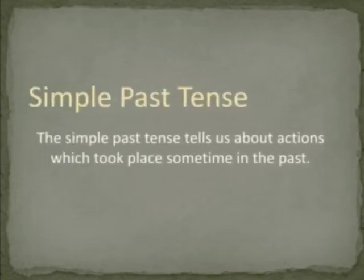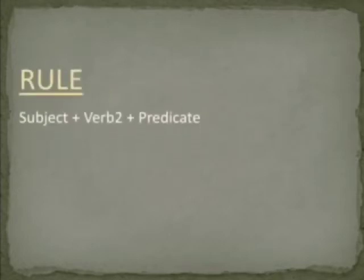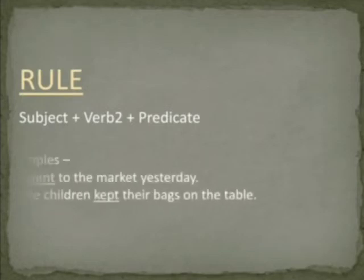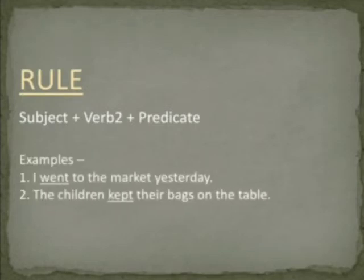Now let us see what is simple past tense. The simple past tense tells us about actions which took place sometime in the past. The rule for simple past tense is: subject plus verb two plus predicate. Let us see some examples.